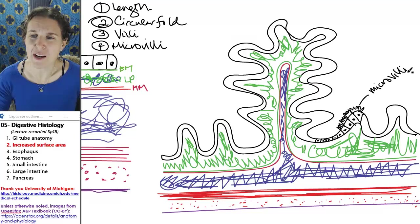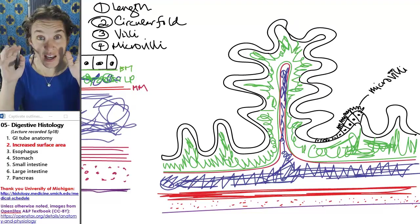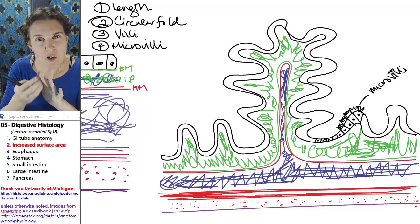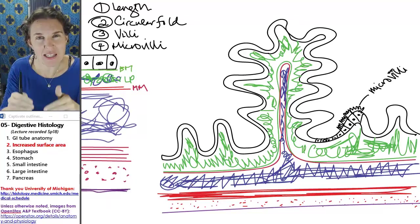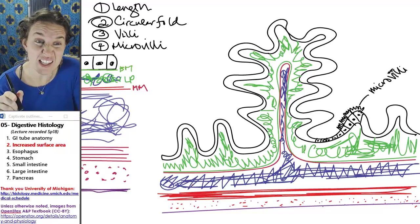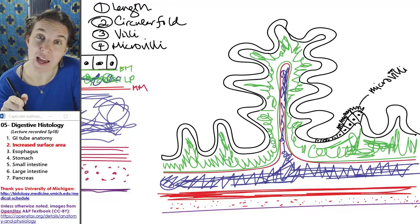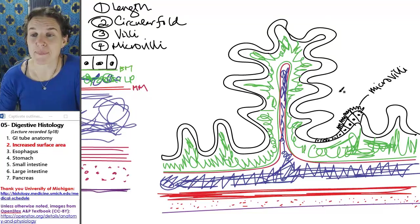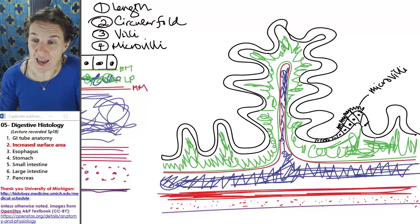Microvilli are these little extensions of cell membrane and cytoplasm found on individual cells. Every single one of these cells is covered in microvilli on the luminal edge. That increases surface area. In addition to that, in addition to the microvilli...